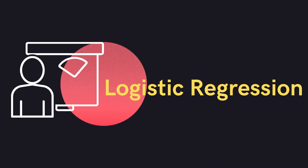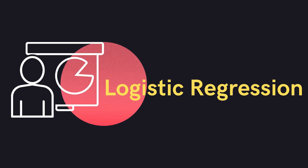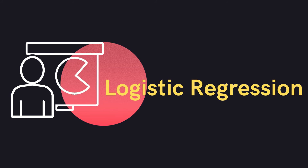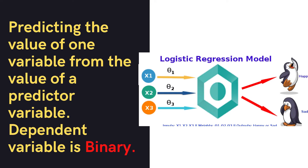When the dependent variable is binary — for example, male or female, happy or sad, on or off — we go for logistic regression. In logistic regression, the dependent variable is binary.